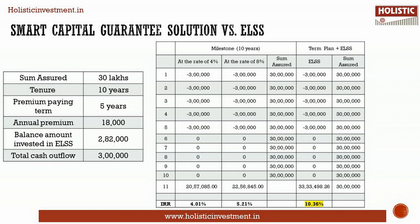Under the Milestone option, the aggregation of both guaranteed and non-guaranteed benefits at the end of 10 years is Rs. 20 lakhs to around Rs. 22 lakhs. On the other hand, the final maturity value of ELSS at the end of 10 years after paying tax is Rs. 33.33 lakhs. The IRR post-tax return of ELSS is 10.36% — an inflation-beating return which is missing in the Max Life Smart Capital Guaranteed Solution. Based on risk appetite and time horizon, choose an appropriate investment such as ELSS or a debt option like PPF, which currently offers 7.1%.